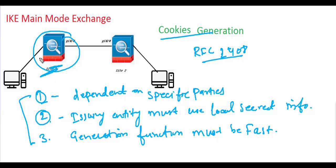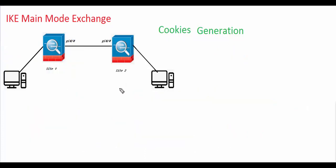It becomes almost impossible for someone else — including an attacker — to generate the same cookie, because the issuing entity uses locally secret information, such as a chosen random number. Even if you know the source IP, destination IP, source port, and destination port, you still cannot generate the same cookie that the ASA has generated.